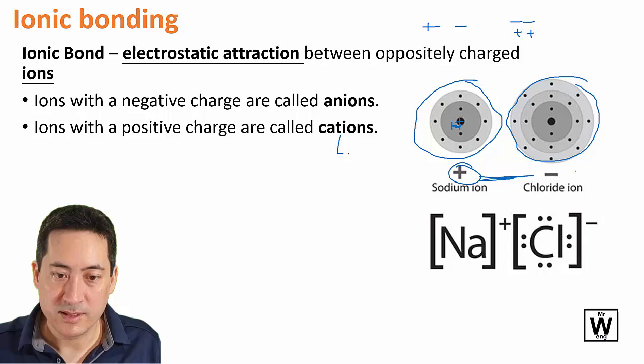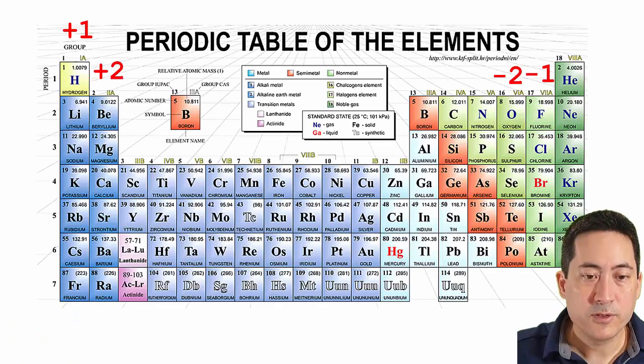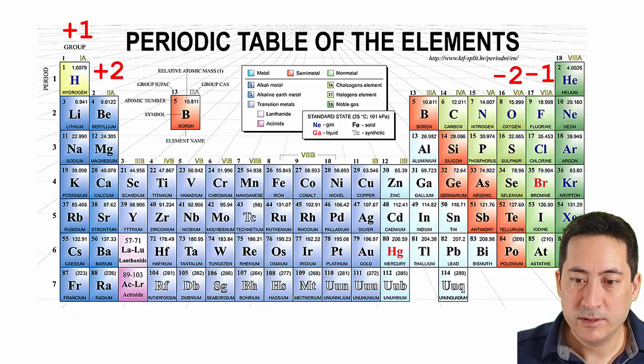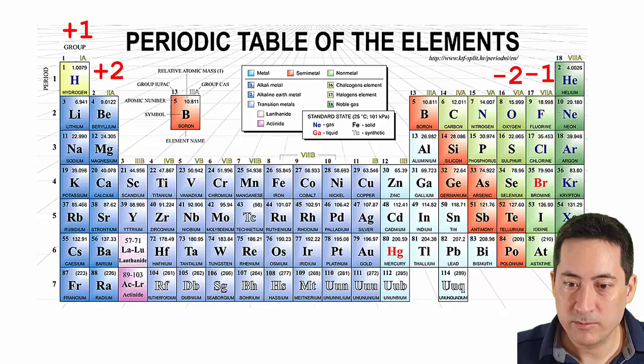So the cation, because it has a T, that's one way to remember that it's positive. If you're looking at the periodic table, you can work out what the charge of the ion will be. So fluorine will gain one electron to have a full shell, so everything in this group will become negative one.